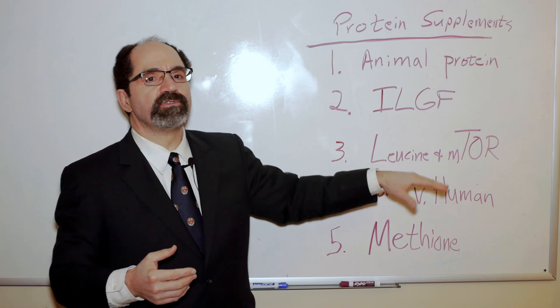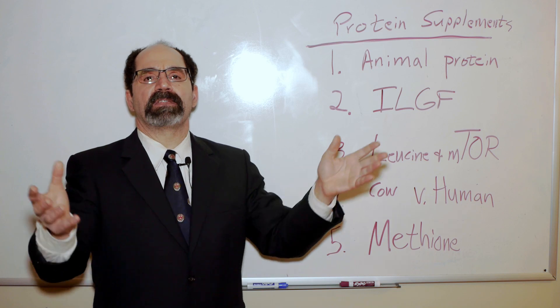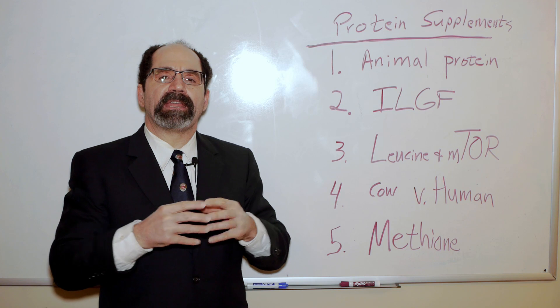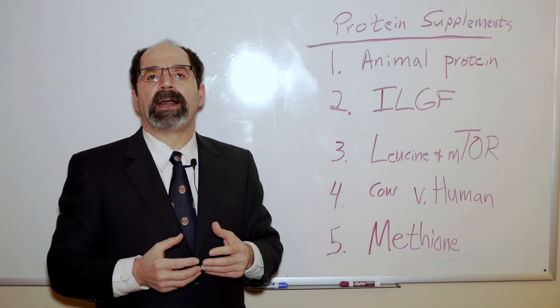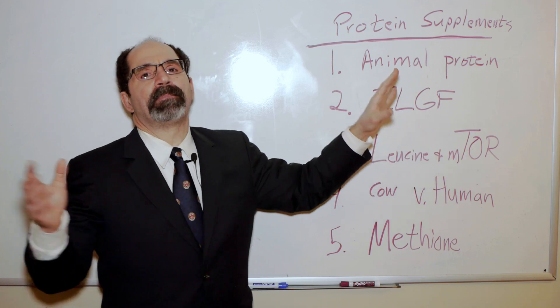Next thing we'll talk about is leucine. Leucine is a branched chain amino acid. Its side chains like a methylpropane. And so leucine is the main amino acid that has an excitatory effect upon what is called the mTOR system.